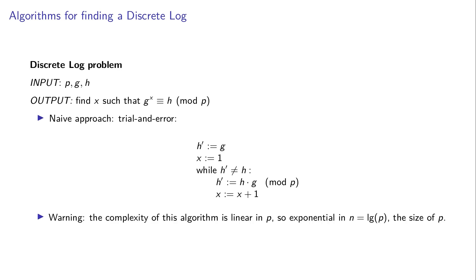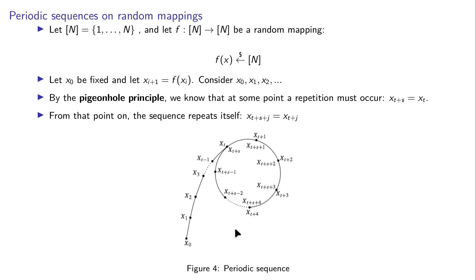A naive approach is simple trial and error. You compute g, g squared, g cubed, keep iterating and multiplying by g, comparing each result to h. The complexity of this algorithm is linear in p, but that means it's exponential in the size of p, which sometimes confuses people.